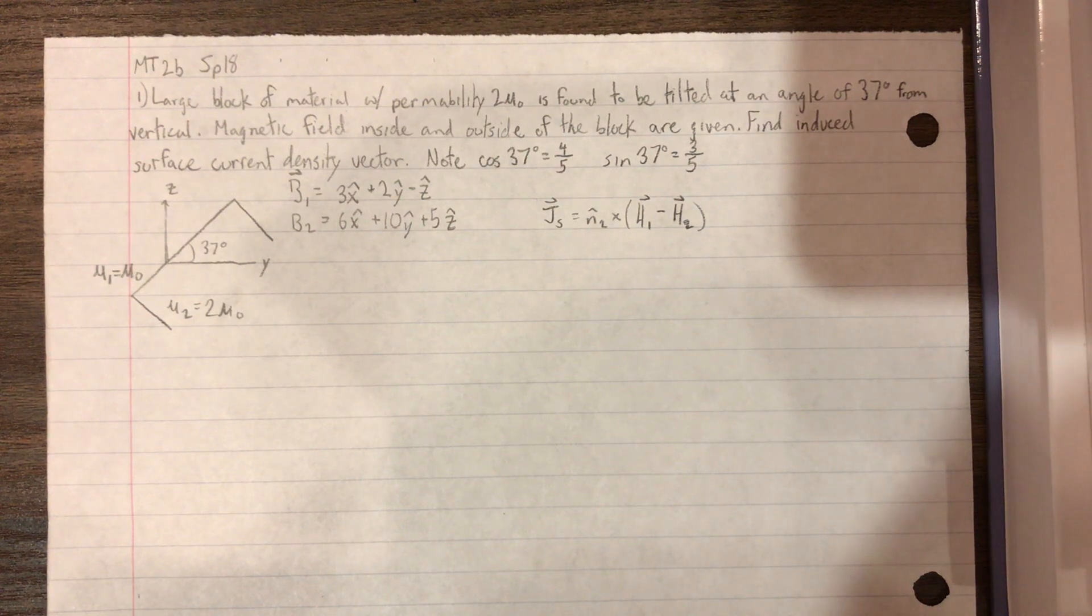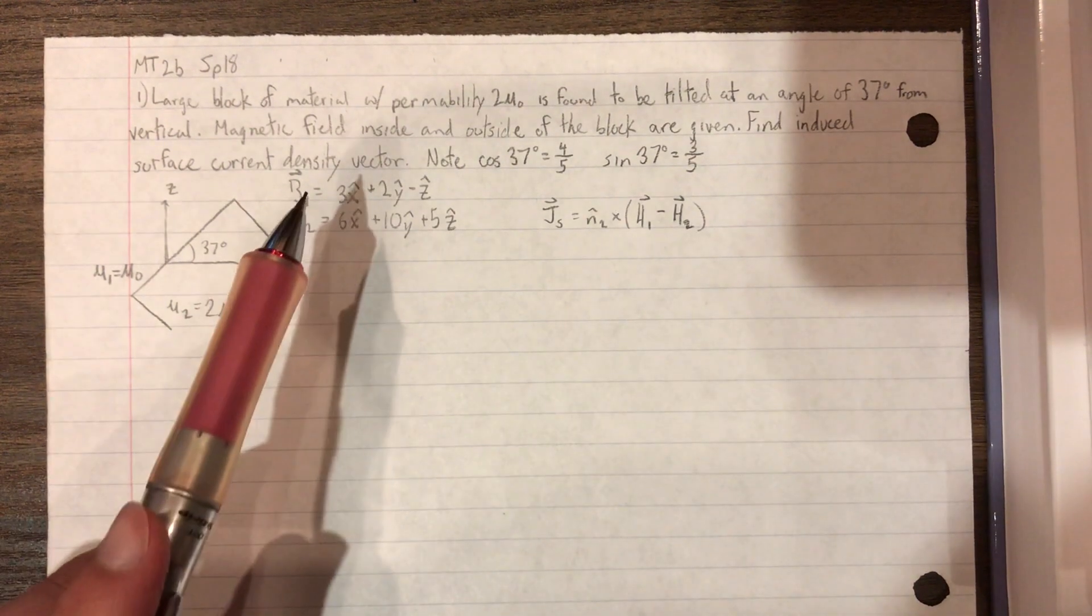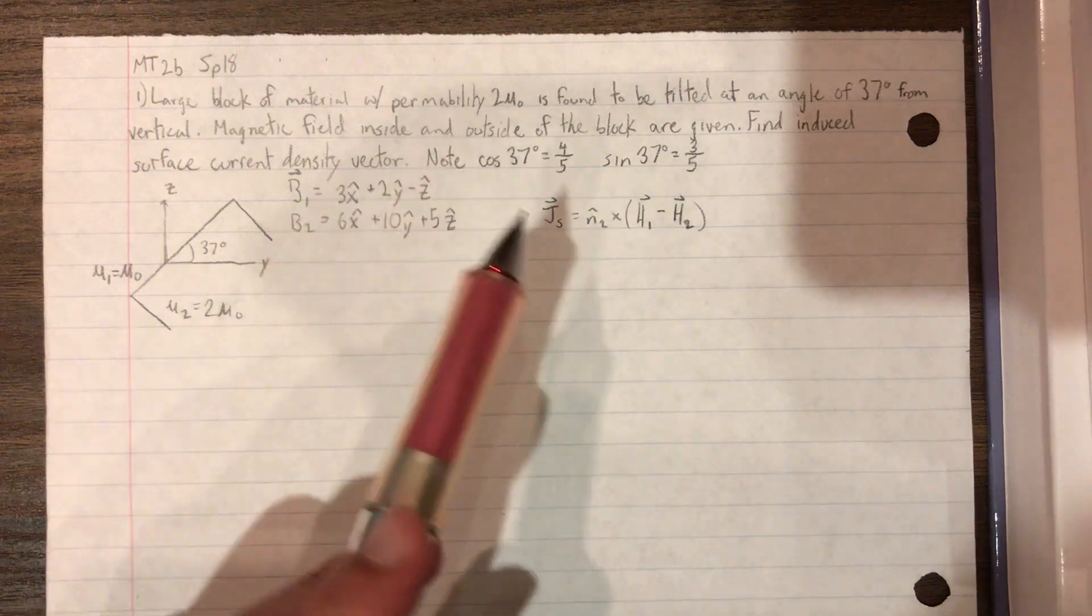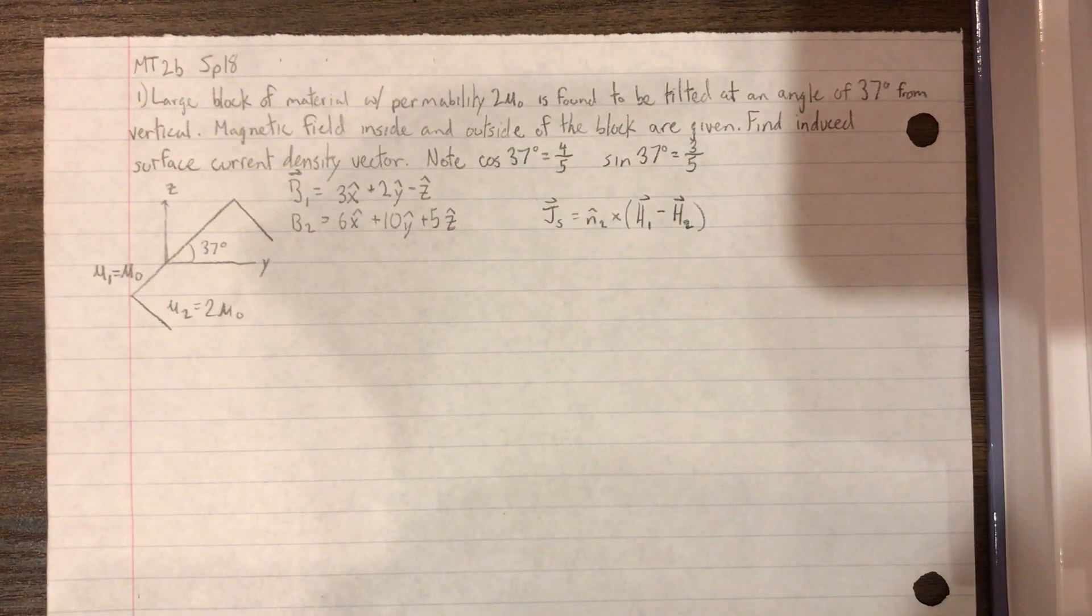The magnetic field inside and outside of the block are given, which is the B1 and B2. Find the induced surface current density vector, and then the note is cosine 37 equals 4 fifths, and sine 37 equals 3 fifths.